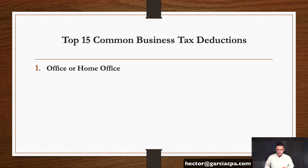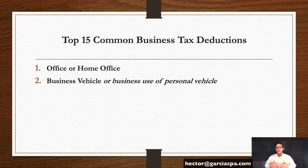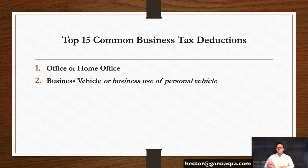Business vehicle: if you buy a vehicle for the business under the business name that is business in nature, not personal, the entire expenditure — the gas, insurance, all that stuff — will be deductible. If you use a personal vehicle for business purposes, keep a mileage log and multiply the total business miles by the annual mileage reimbursable rate, which for 2020 is $0.58 per mile.